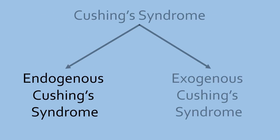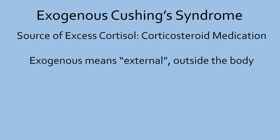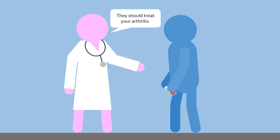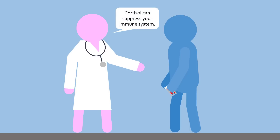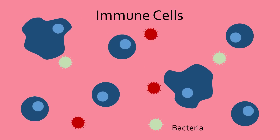Let's look at the other type of Cushing's syndrome. In exogenous Cushing's syndrome, medication is the source of excess cortisol. Corticosteroid medication is not only used to treat Addison's disease, but also immune system diseases such as asthma, arthritis, gout, and other autoimmune diseases. This is because, aside from energy production, cortisol also has the function of suppressing the immune system, which can treat these autoimmune diseases where the immune system is out of control.